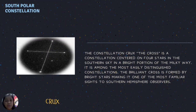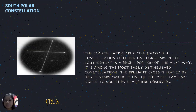The constellation Crux, or the Cross, is a constellation centered on four stars in the southern sky in a bright portion of the Milky Way. It is among the most easily distinguished constellations. The brilliant cross formed by bright stars makes it one of the most familiar sights to southern hemisphere observers.